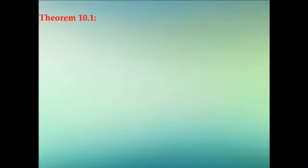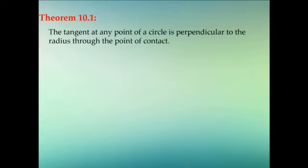Now we are going to learn Theorem 10.1, which gives a better understanding of circles and their tangents. The theorem states: the tangent at any point of a circle is perpendicular to the radius through the point of contact. So if we have a circle with a point and a tangent drawn at that point, that tangent is perpendicular to the radius drawn from the center to that point of contact.